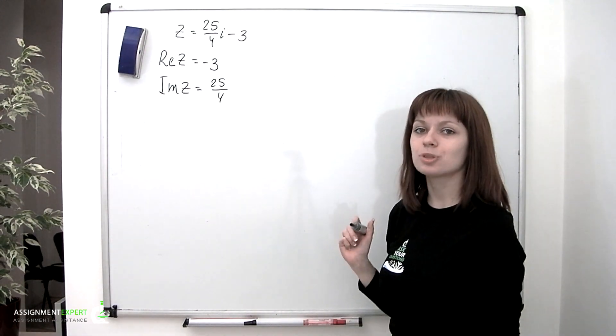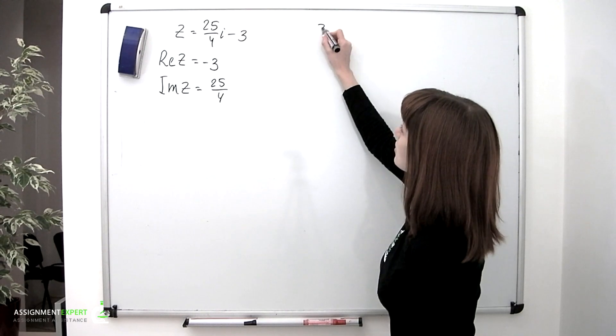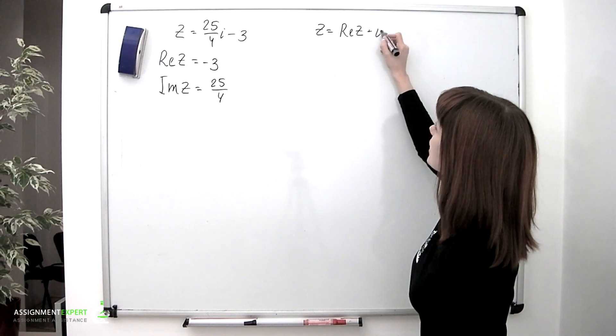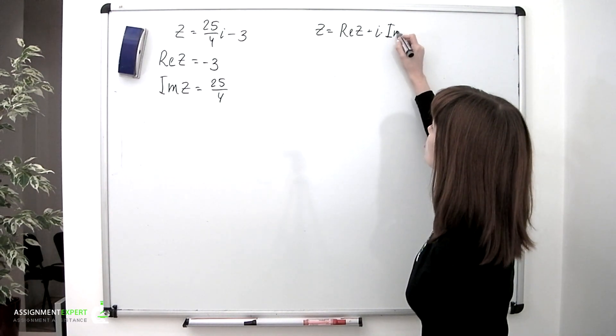In general, a complex number may be given as follows: z = Re(z) + i·Im(z).